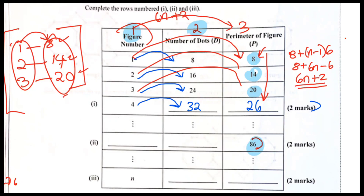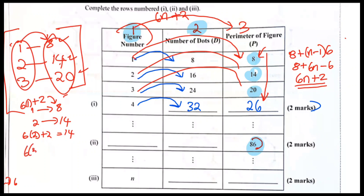Let's check: column one value 1 → 6 times 1 is 6, plus 2 is 8. Check. Column one value 2 → 6 times 2 is 12, plus 2 is 14. Check. Column one value 3 → 6 times 3 is 18, plus 2 is 20. Check. So this formula works — this is what works for moving from column one to column three.